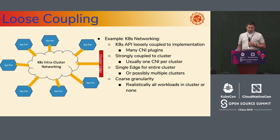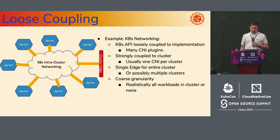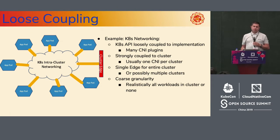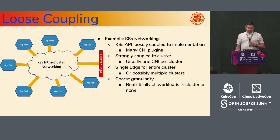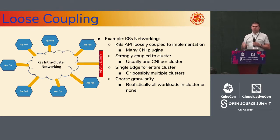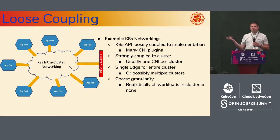With Kubernetes networking, you are decoupled from the specific implementation through the CNI — Container Networking Interface. On the other hand, it is also strongly coupled because you typically get one CNI plugin per cluster. You can do multiple CNI, but it's not consistent or easy to do. There's also a single edge typical for the entire cluster, and granularity is limited — you either get your networking or you don't; you can't tweak it for particular workloads.